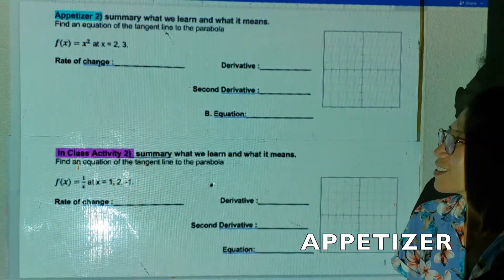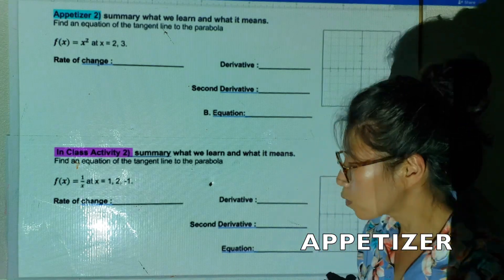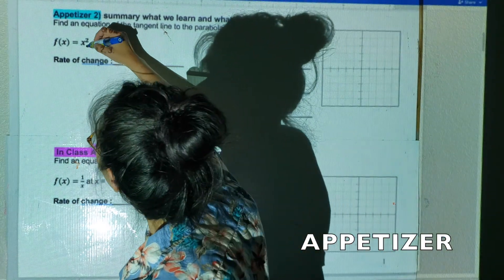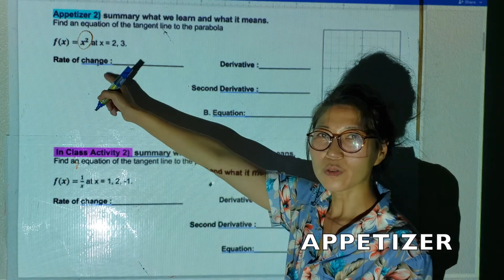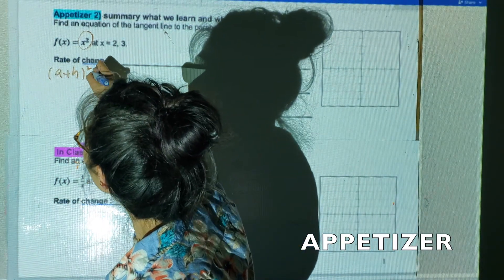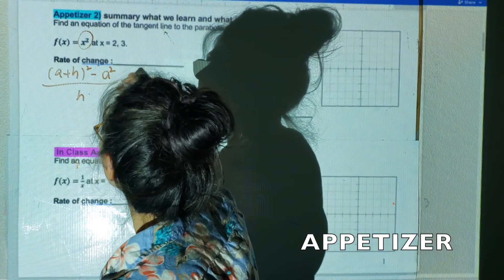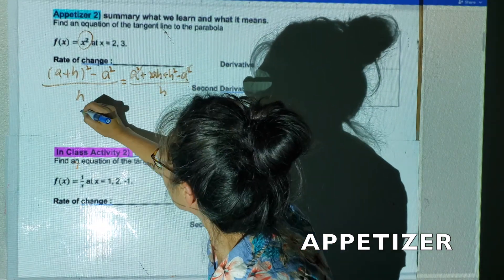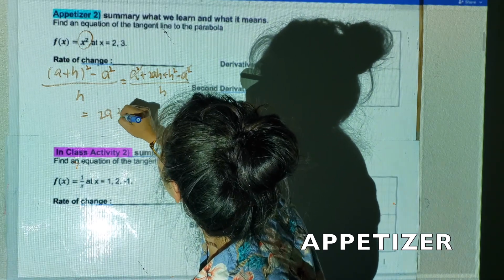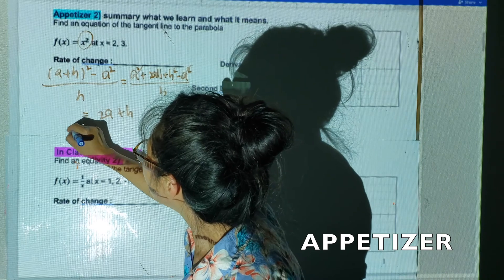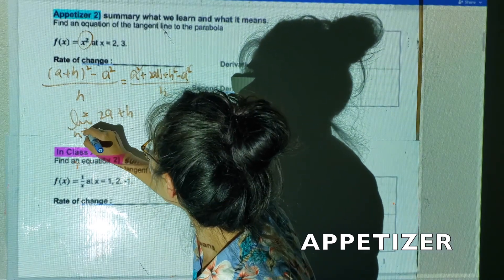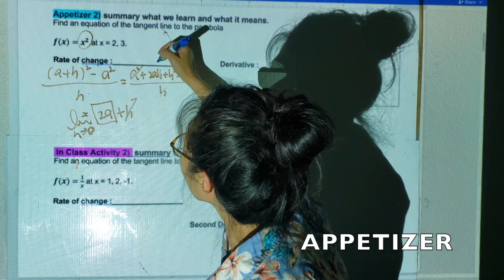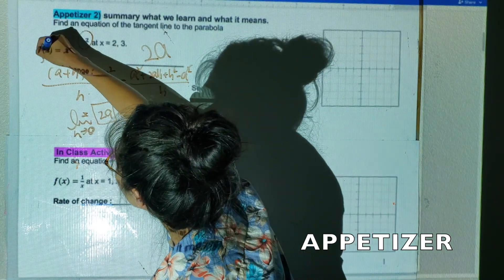Appetizer two will be a whole summary of chapter two. I have the function x squared. Let's do rate of change one more time: f(a+h) minus f(a) over h. Expanding gives a² plus 2ah plus h² minus a² over h, which simplifies to 2a plus h. Taking the limit as h goes to zero gives 2a as my derivative.